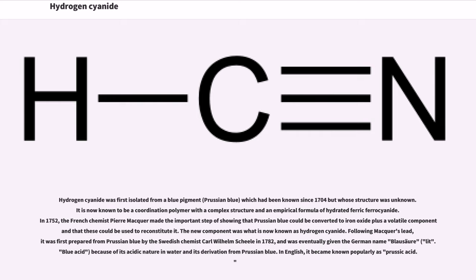The new component was what is now known as hydrogen cyanide. Following Macquer's lead, it was first prepared from Prussian blue by the Swedish chemist Carl Wilhelm Scheele in 1782 and was eventually given the German name Blausäure because of its acidic nature in water and its derivation from Prussian blue. In English, it became known popularly as prussic acid.